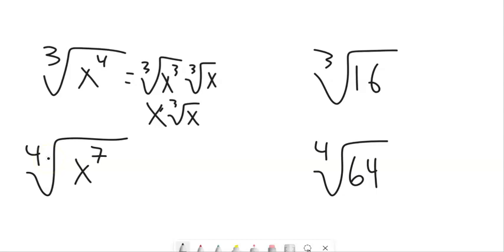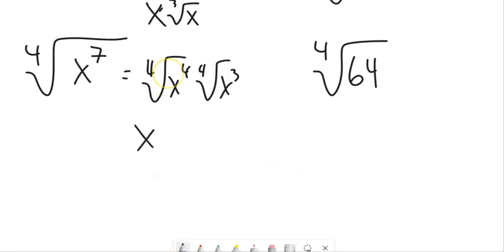If we had this, same sort of thinking. We could take four of these out, leaving us three of them. This is just an x. And this is a fourth root of x cubed.